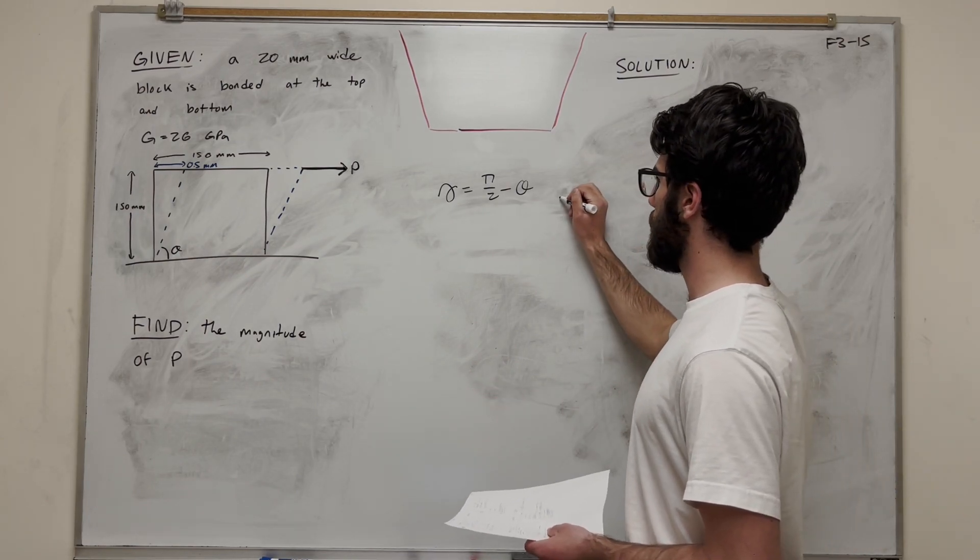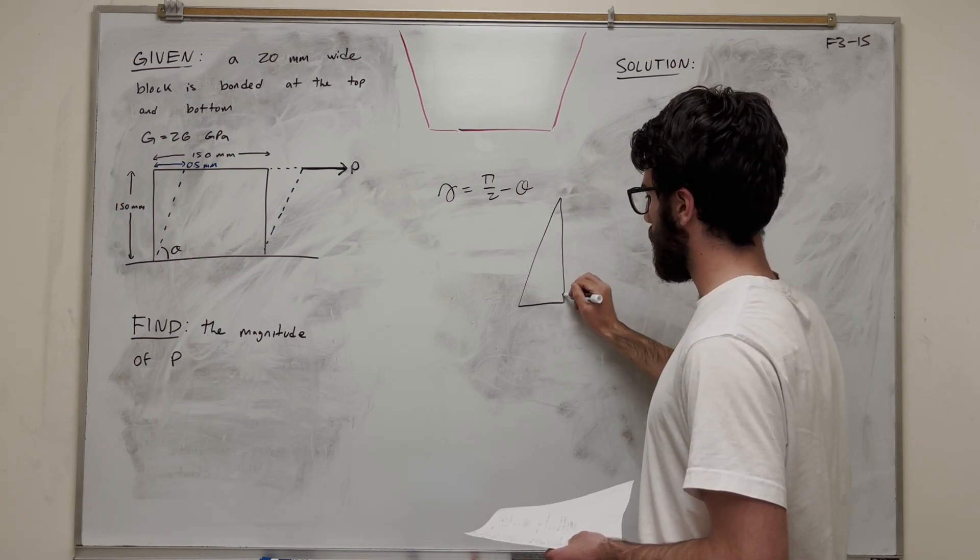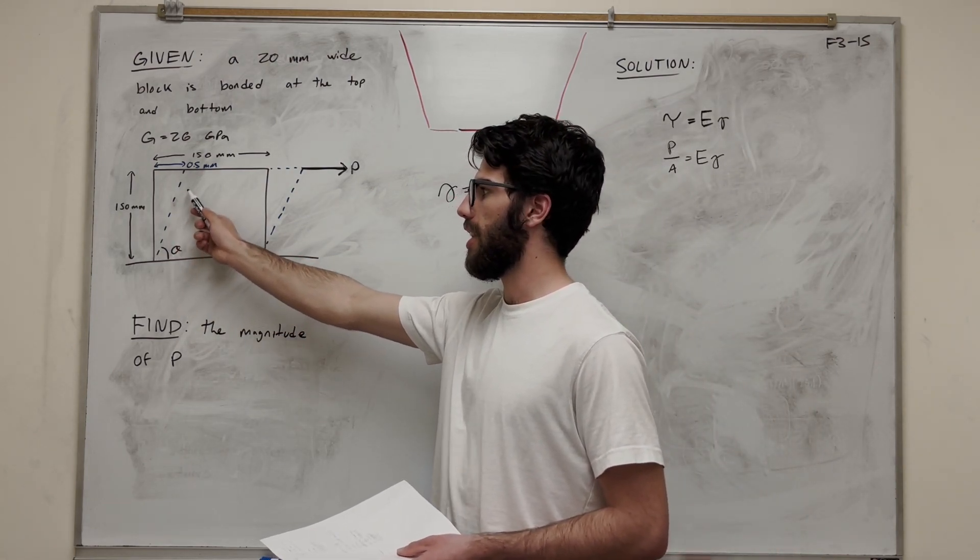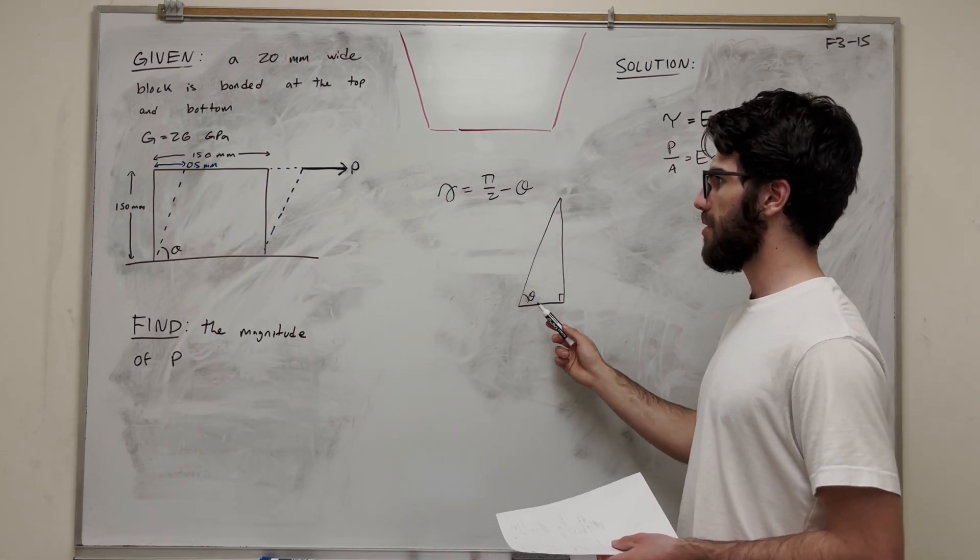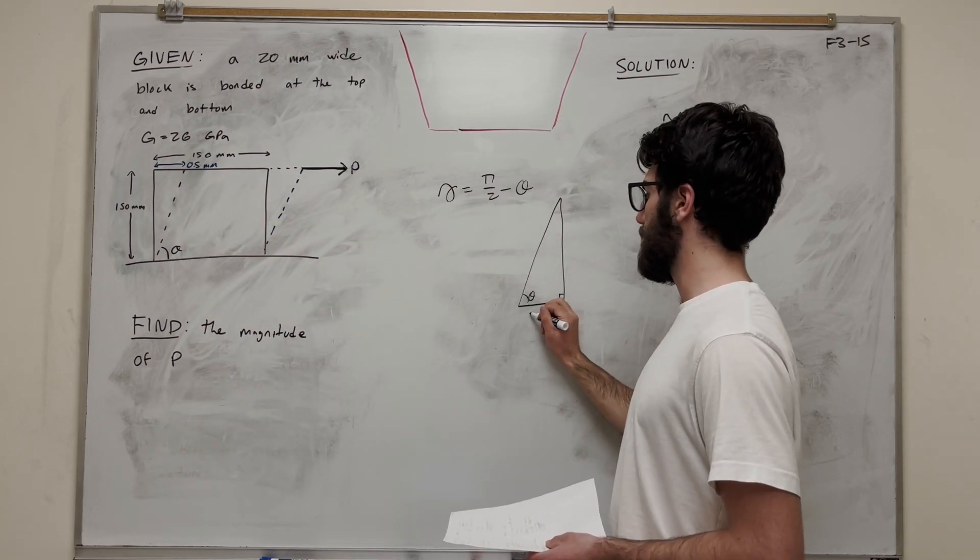We need to draw a triangle. I'm going to exaggerate this triangle just for sake. This triangle is that same triangle here with the dotted lines. Now we know that it becomes 0.5 millimeters over, so this bottom is going to be 0.5.